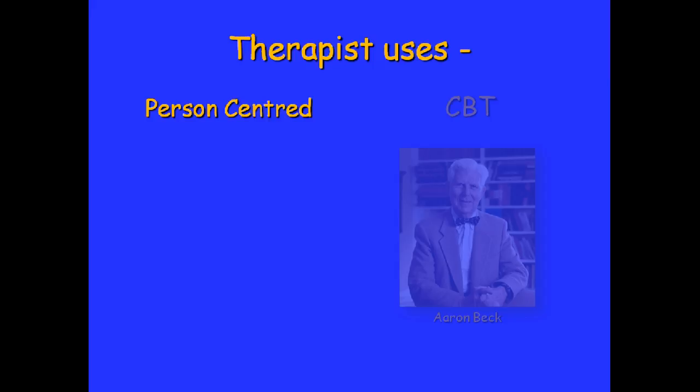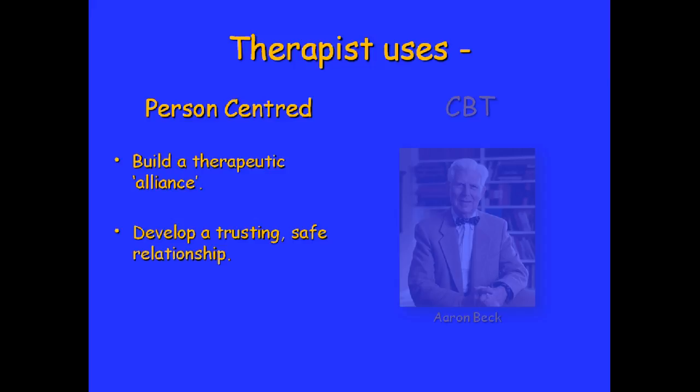The integrative therapist may use the person-centred approach to build a therapeutic alliance — in other words, to build a relationship with the client and gain rapport and understanding with them, developing a trusting, safe relationship. This shouldn't be overlooked, because trusting safe relationships mean clients are more likely to tell you the truth, to share what's really on their minds, and not be stuck in shame, distrust, or fear. The person-centred approach, if practised well, helps clients feel valued and safe.